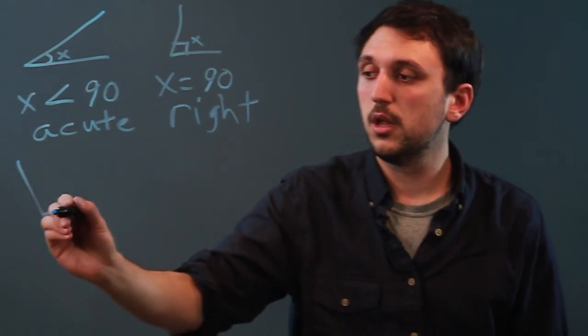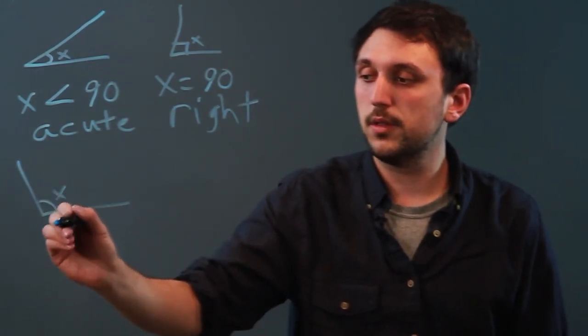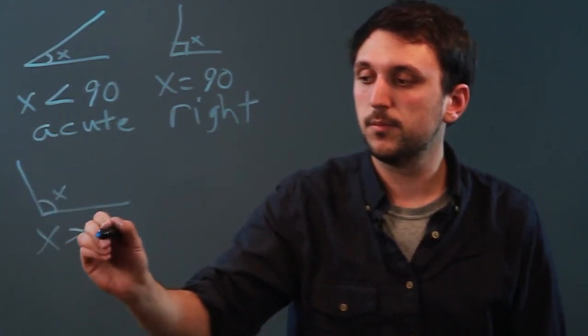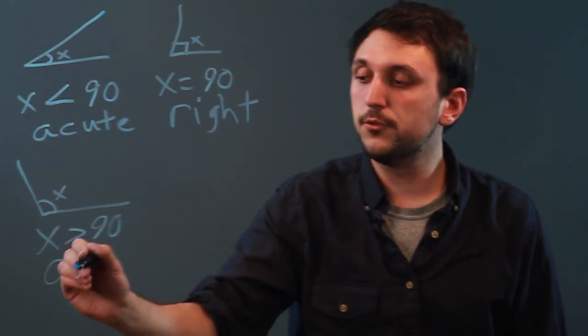If you have an angle that's greater than 90 degrees, that's called obtuse.